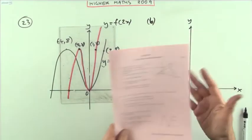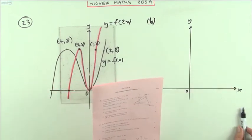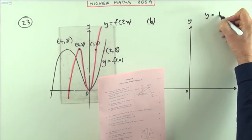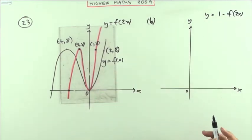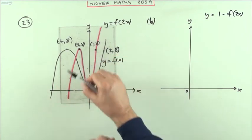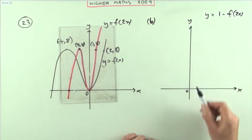Now for part b, on a separate diagram, sketch the graph of y equals 1 minus f of 2x. Now f of 2x is this new graph in red here, so 1 minus it.